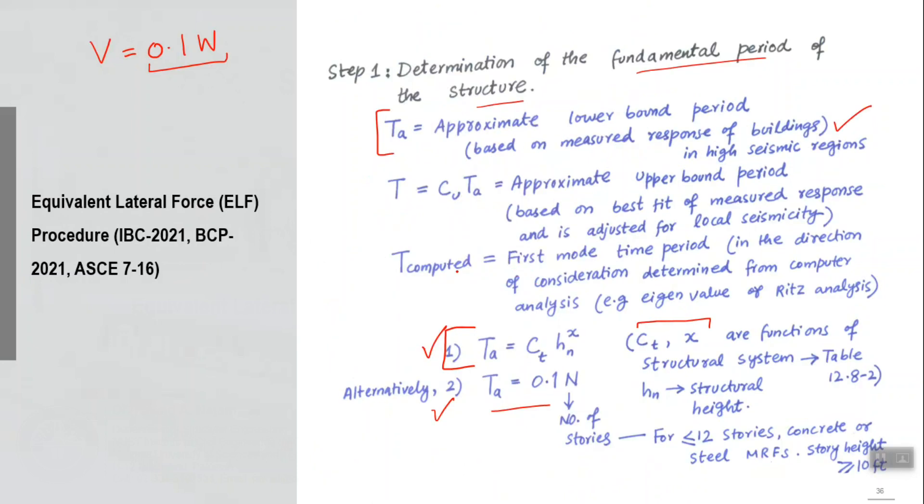There is another thing: there is an upper limit on that Ta also, and that is Cu times Ta. Cu is a factor which is greater than one and it will describe the upper limit, upper bound time period.